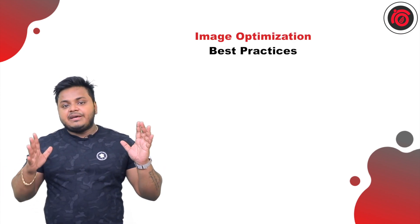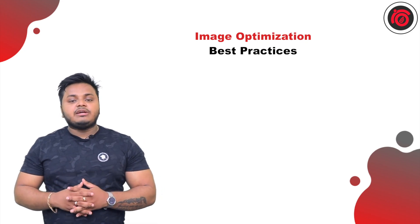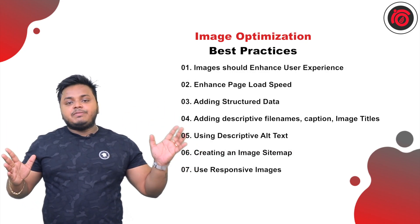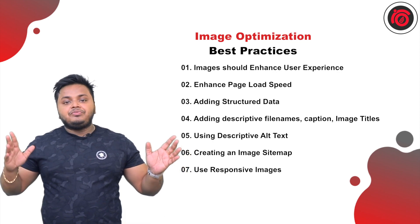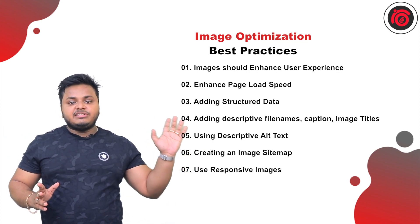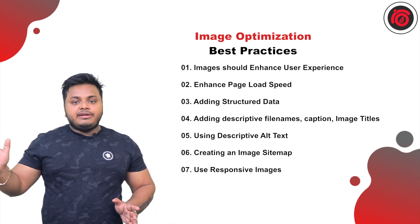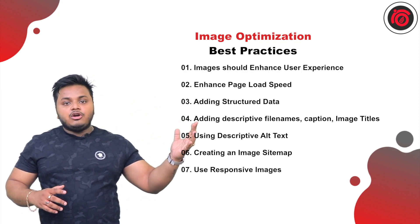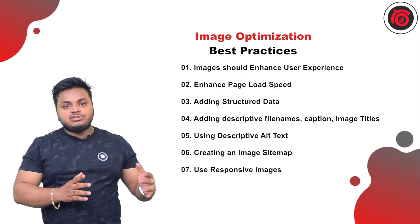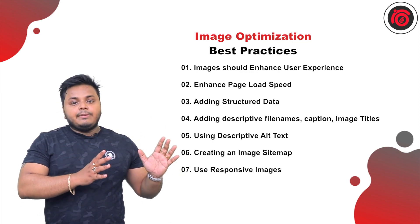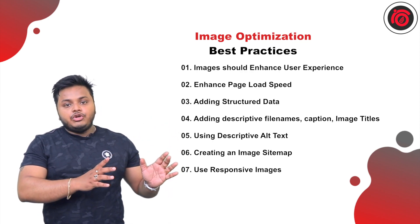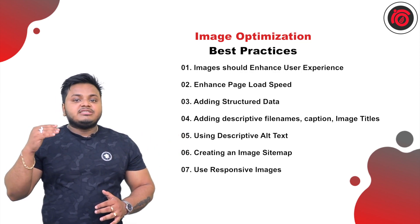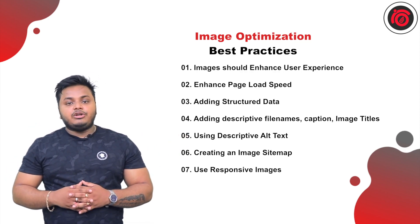Let us see some of the best methods by which image optimization can happen. As you can see from the screen, there are a variety of ways by which you can optimize your images, like using a CDN, or using an alt text for your images, or labeling your images with proper sizes and resolutions, or even making a proper caption for your images, and also reducing the bandwidth of the images so that it does not take too much page load time.